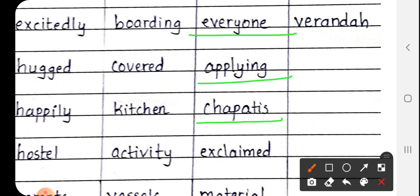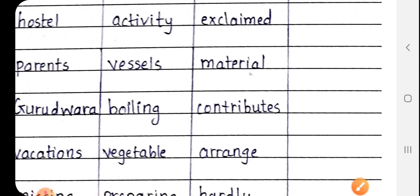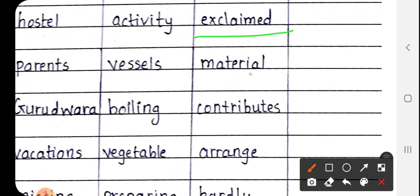Chappatis, C-H-A-P-A-T-I-S. Chappatis means roti. Next Exclaimed, E-X-C-L-A-I-M-E-D. Exclaimed means kahna. Next is Material, M-A-T-E-R-I-A-L. Material means samagri.